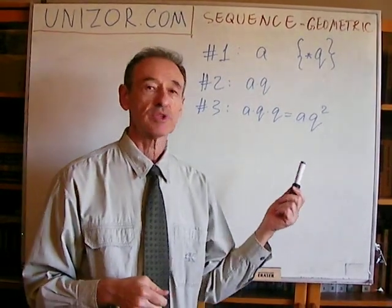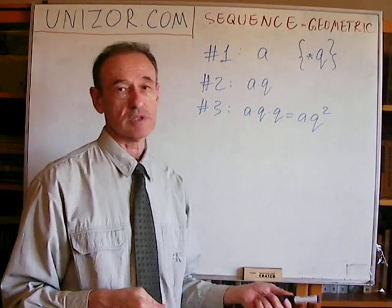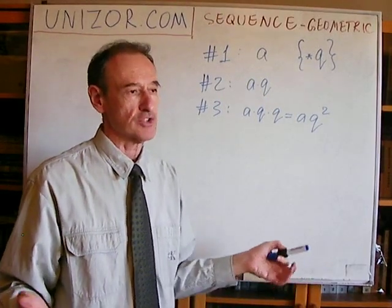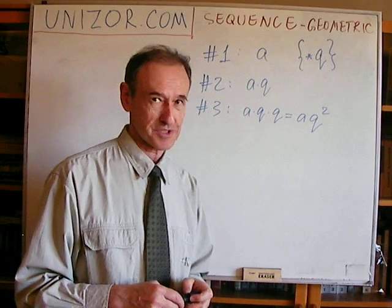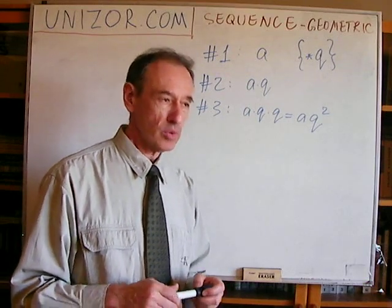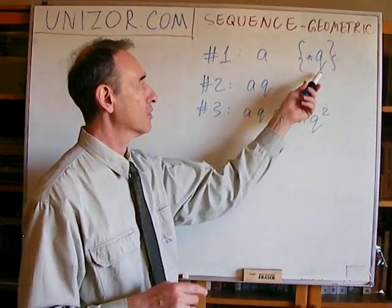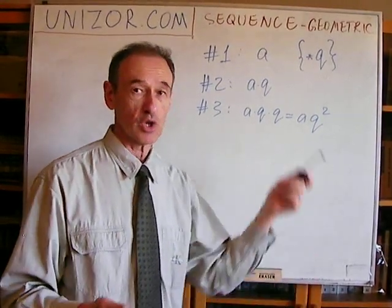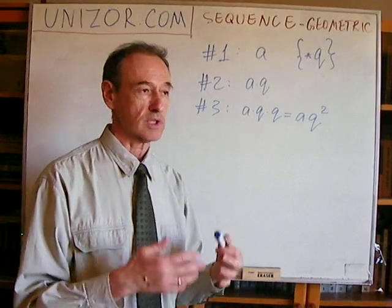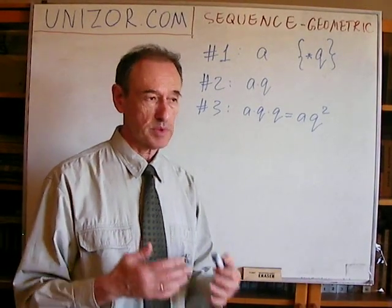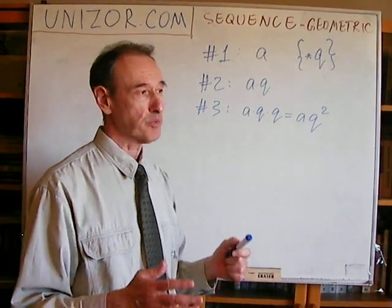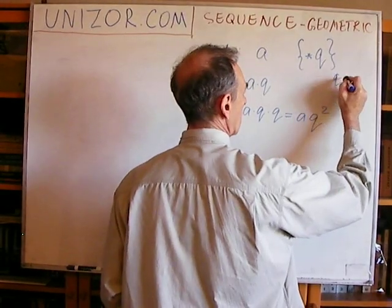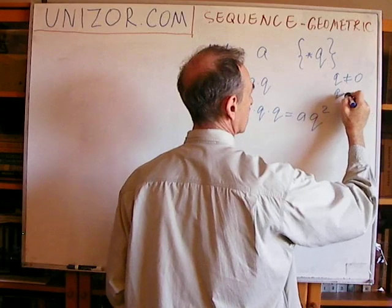Obviously, there are some trivial cases. For instance, what if q is equal to zero? You will get a, and then zero, zero, zero, zero — trivial. Another trivial case is when q is equal to one. You will have a, a times one which is a, a times one times one which is still a. So the whole geometric progression would contain the same element repeated many times. We will assume that q is not equal to zero and not equal to one.